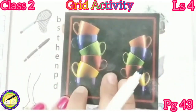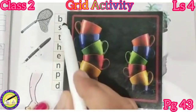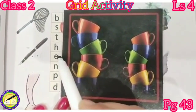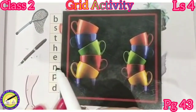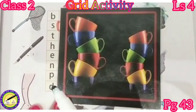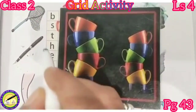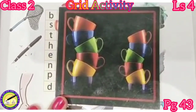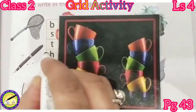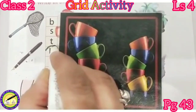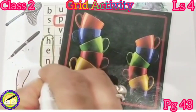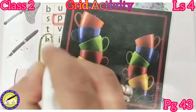Let us read the letters: B, S, T, H, E, N, P, P. Yes. Which is the word here? Hen — H, E, N, hen. Let us encircle it: H, E, N.